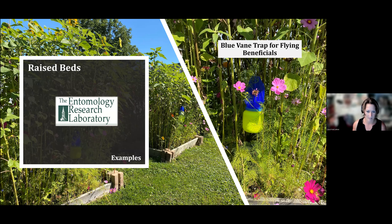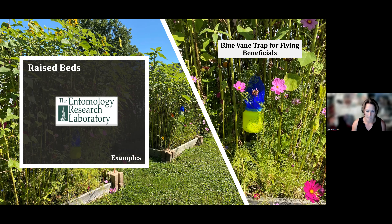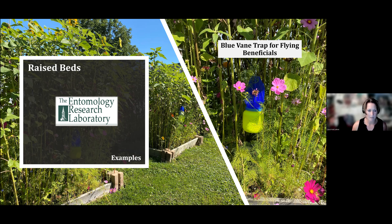We are monitoring these using blue vane traps, which are a popular way to sample for foraging beneficials, particularly bees, because bees are really attracted to blue and yellow. We're trying to make a reference collection to catalog the exact species visiting this habitat strip. Sometimes it's really hard to visually inspect them because they fly around so quickly — it's hard to get a definitive ID on the fly. Please check these out if you get a chance.